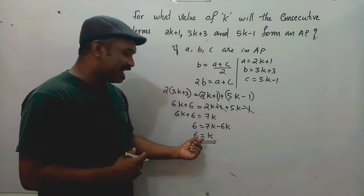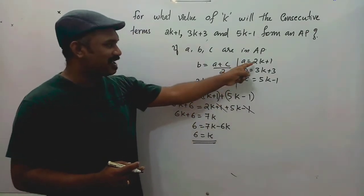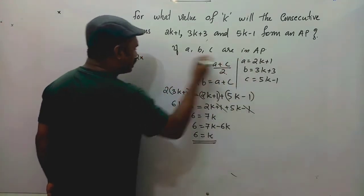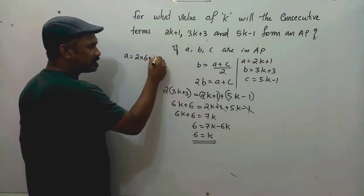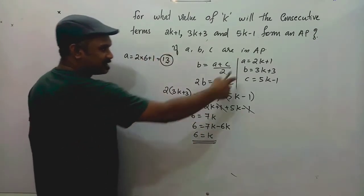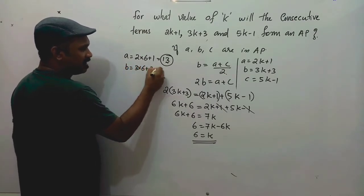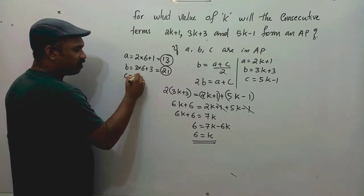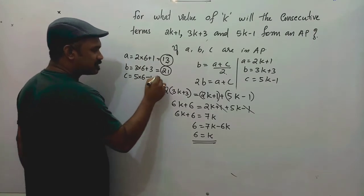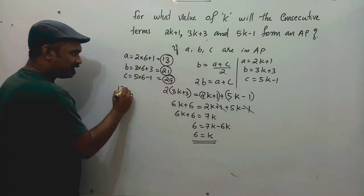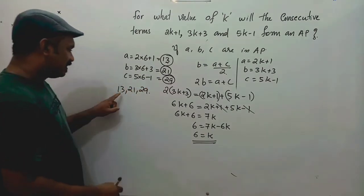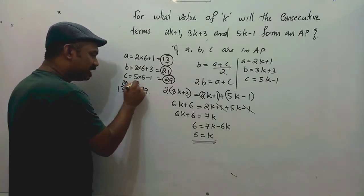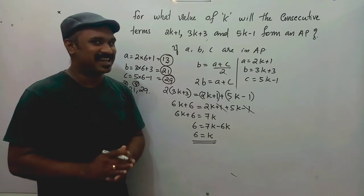With k equals 6: the first term is 2 times 6 plus 1 equals 13, the second term B is 3 times 6 plus 3 equals 21, and the third term C is 5 times 6 minus 1 equals 29. So the AP is 13, 21, 29 — with common difference 8. Adding 8 to 21 gives 29, confirming it is a valid AP.